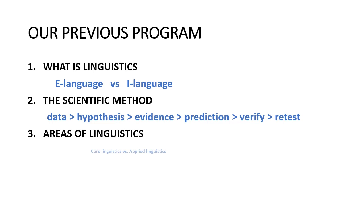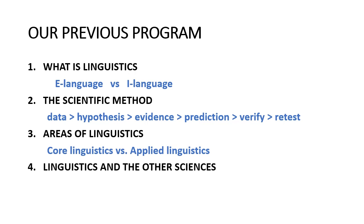Then we talked about the different areas of linguistics, and we proposed that there were two main areas: core linguistics and applied linguistics. For core linguistics, we could divide that into three main areas — sound, form, and meaning. Phonetics and phonology study sound; morphology and syntax cover form; and semantics and pragmatics cover meaning. Finally, we talked about linguistics and the other sciences, saying that linguistics is part of psychology, psychology is part of biology, and biology is part of physics — which is also why we use the scientific method.